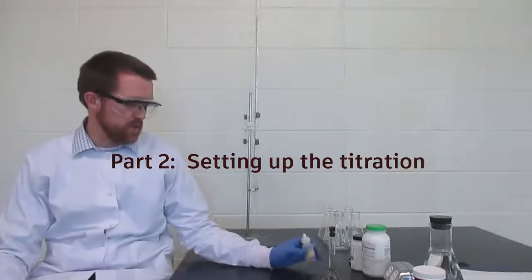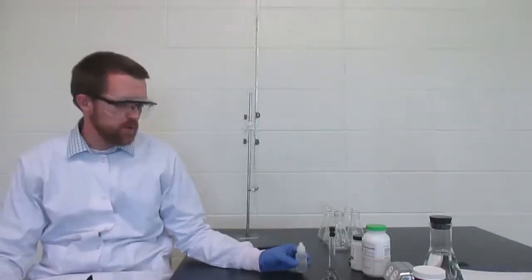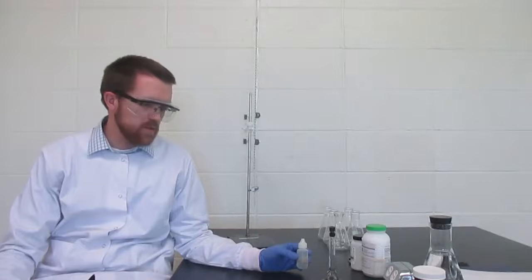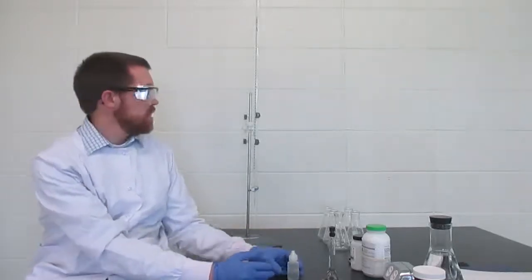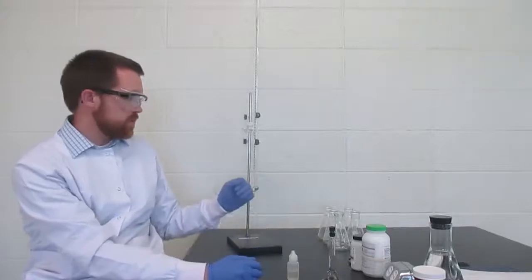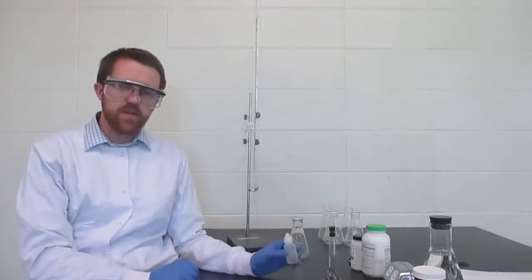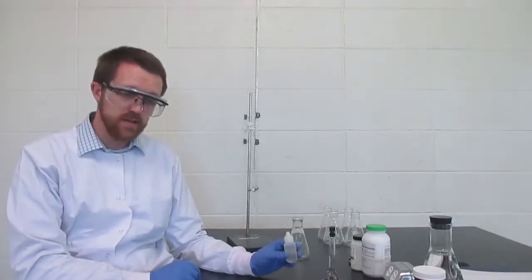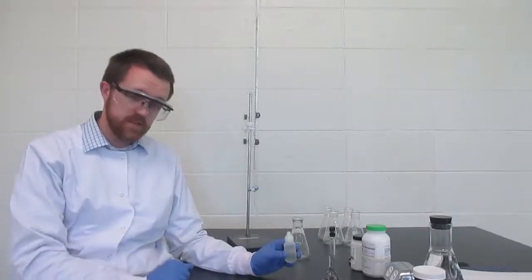In this acid-base titration we're going to be using phenolphthalein as our indicator. Most of this is normally told in your lab procedure, but the reason I'm making a note of it is because that will determine which of our two solutions we will use as our titrant to go in our burette and which one we will use as our sample to go in our flask. Phenolphthalein is an indicator that is colorless in an acid but it turns pink or red in a base, in a strong base.